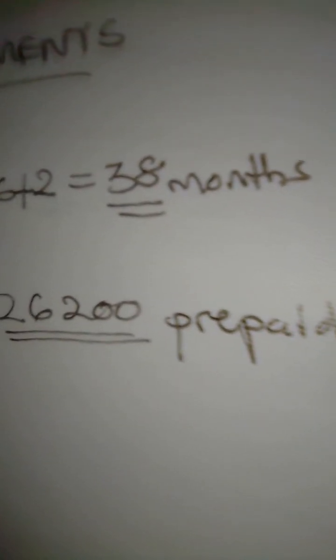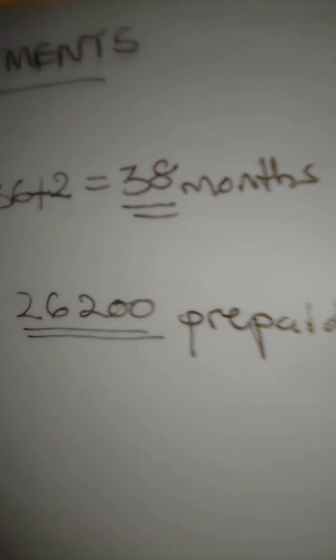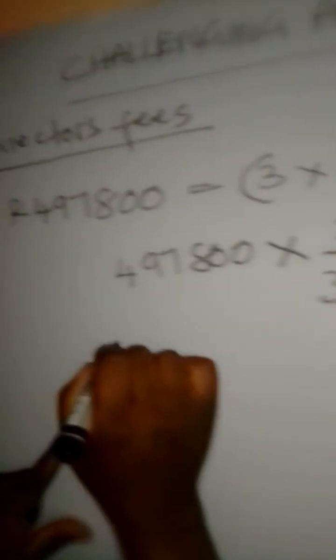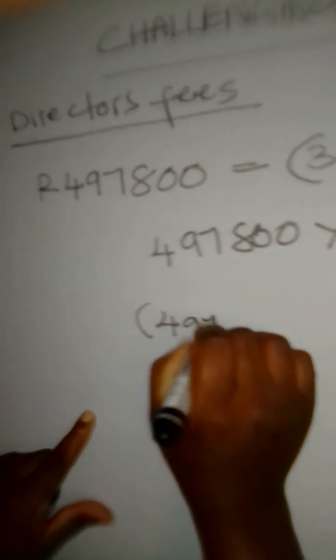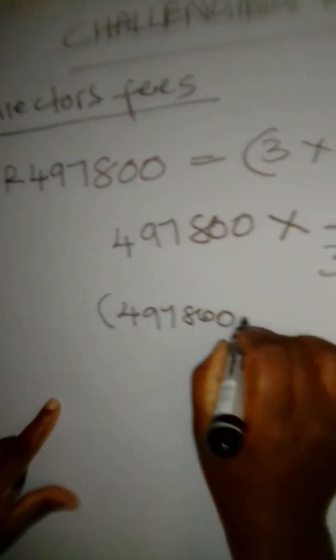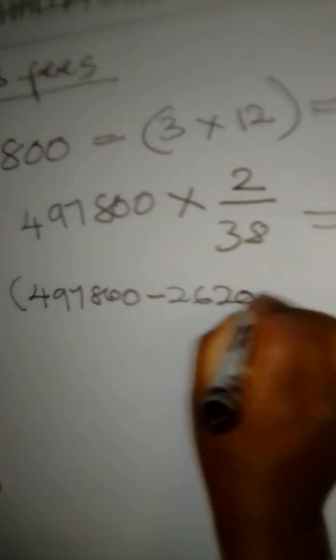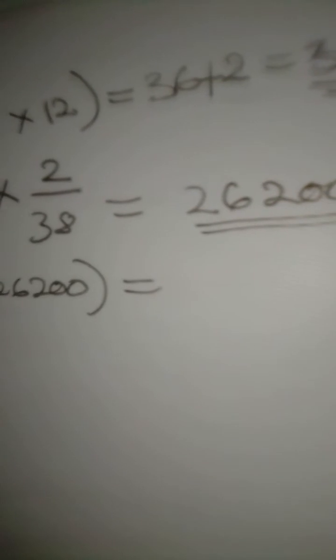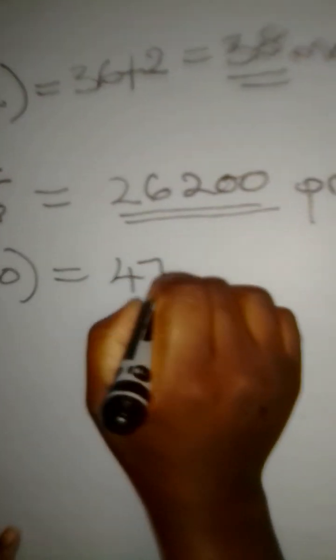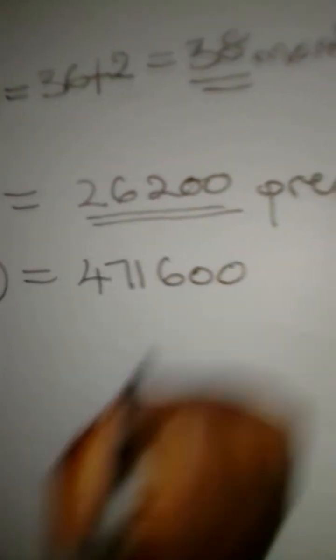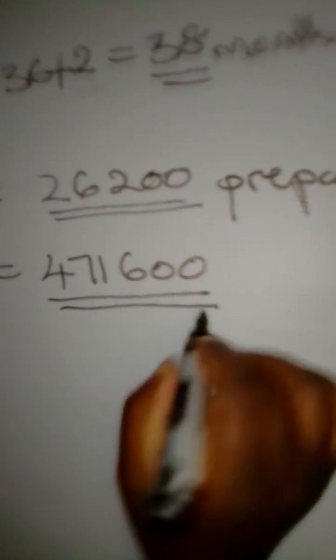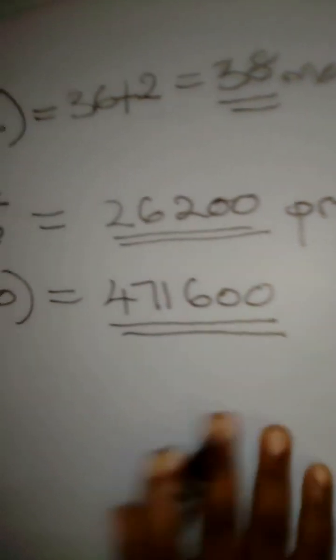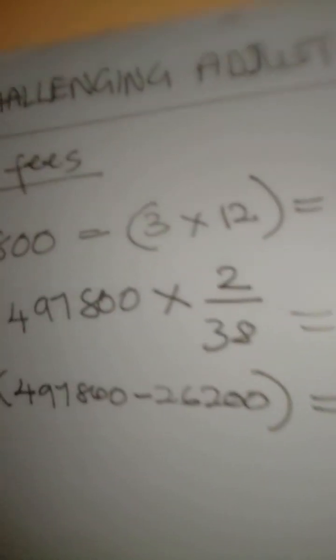What do we do with the prepaid expense? Prepaid expenses are always subtracted. So we are going to say $497,800 minus $26,200. It's actually going to give us something like $471,600. So this is the money that we will record for our director's fees. I hope you have fully understood these calculations.